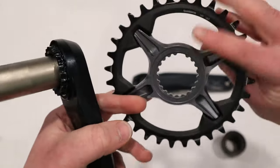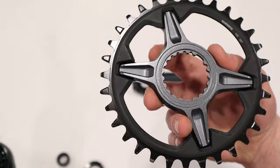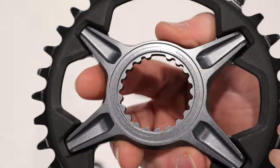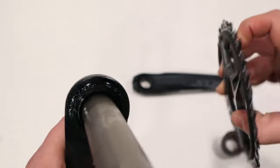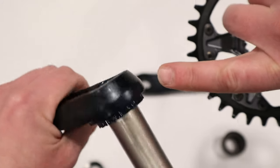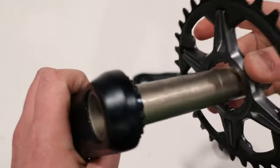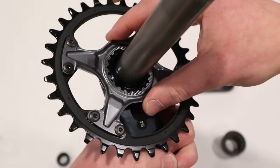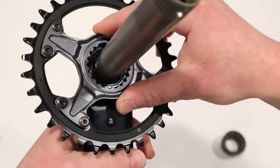And your chainring, in this case the SLX version, is going to have the same spline and a single notch. And the notch is top dead away from the crank arm. And that's how this guy is going to slide right together.